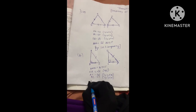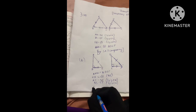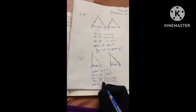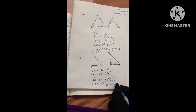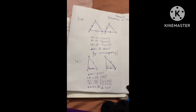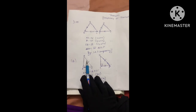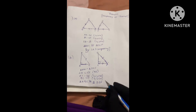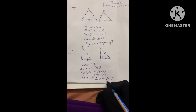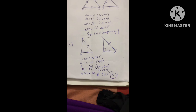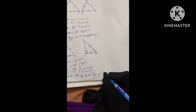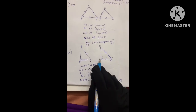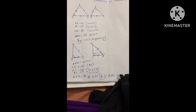So triangle ABC is congruent to triangle DEF by RHS congruency — Right angle, Hypotenuse, Side — because this is a right angle triangle and AC equals DF is the hypotenuse.